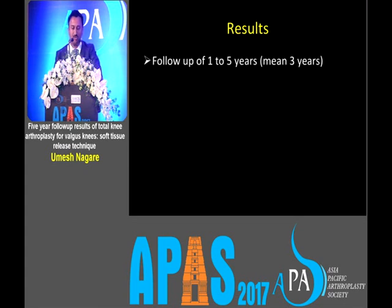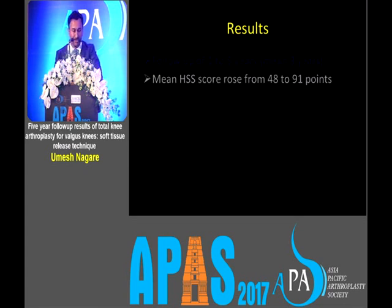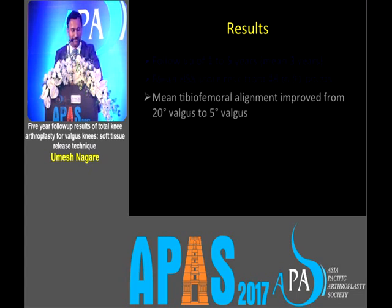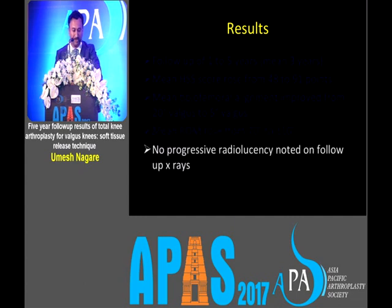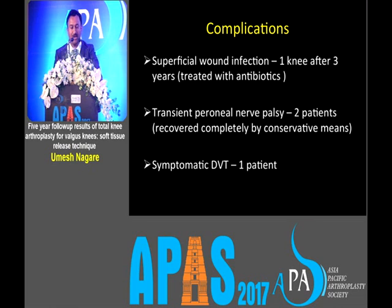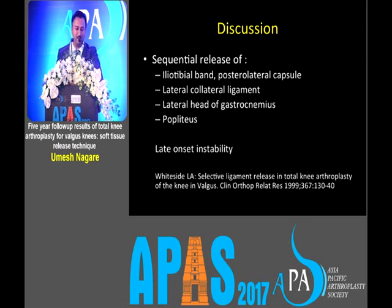Our results show follow-up from one to five years. Mean HSS score rose from 48 to 91 points. Mean tibiofemoral alignment improved from 20 degrees valgus to 5 degrees valgus. Mean range of movement rose from 70 to 110 degrees, and no progressive radiolucency was noted on post-op X-rays. Complications included one superficial wound infection treated with antibiotics, transient peroneal nerve palsy which resolved with conservative means, and one case of symptomatic DVT.